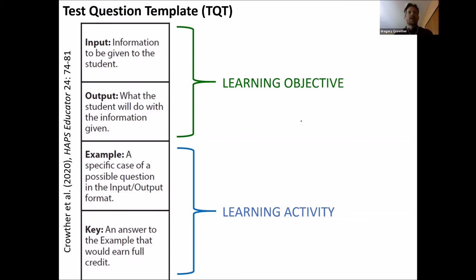Now, TQTs have four main parts, and the first two parts are the input and the output. What information is provided to students, and what will students do with that information? These first two parts correspond roughly to statements of learning objectives.